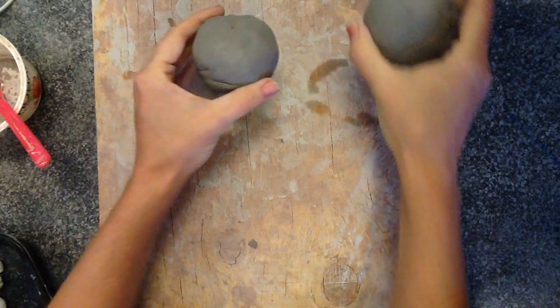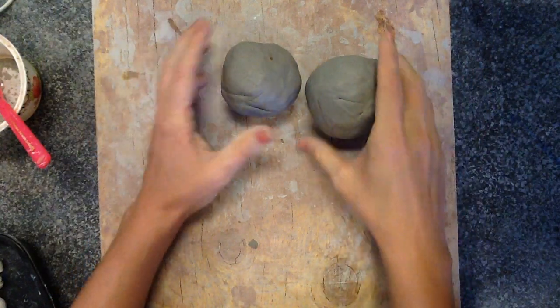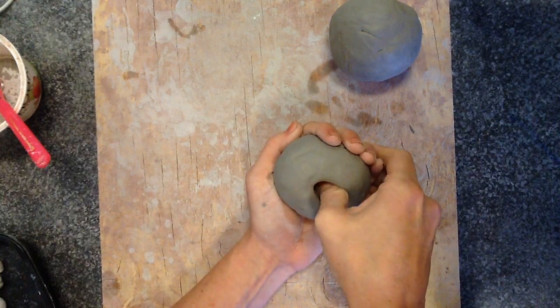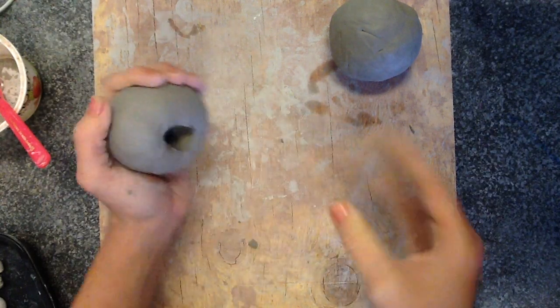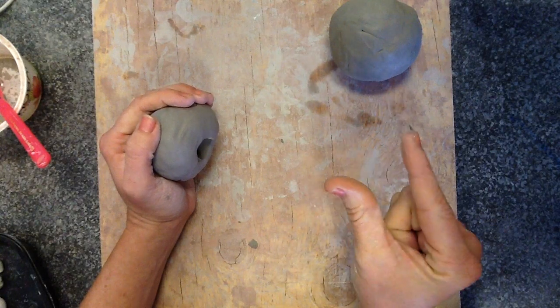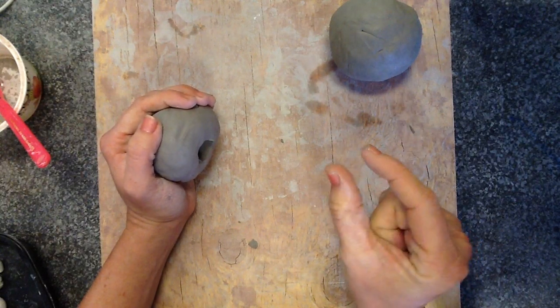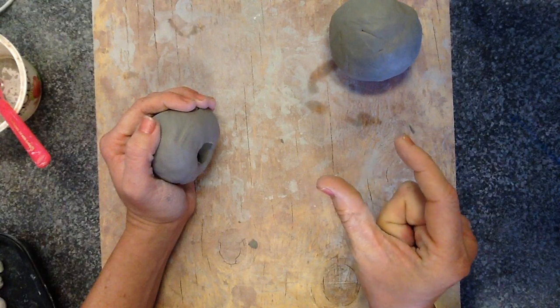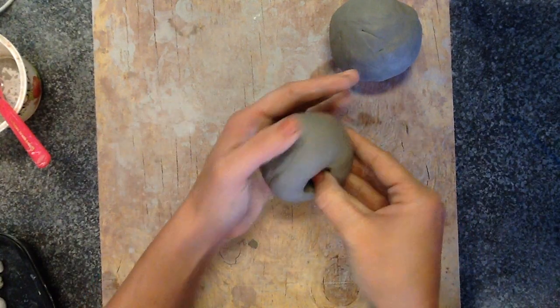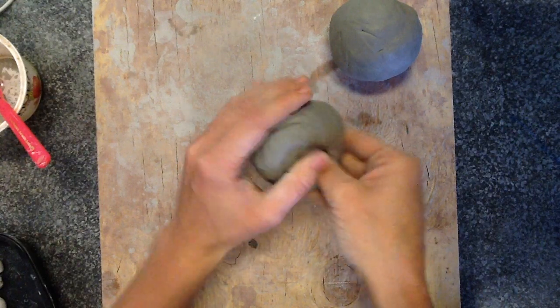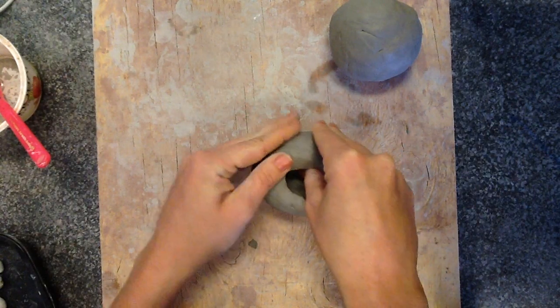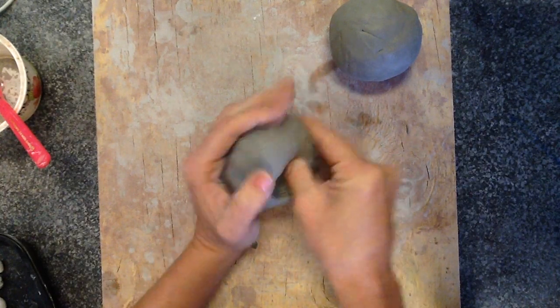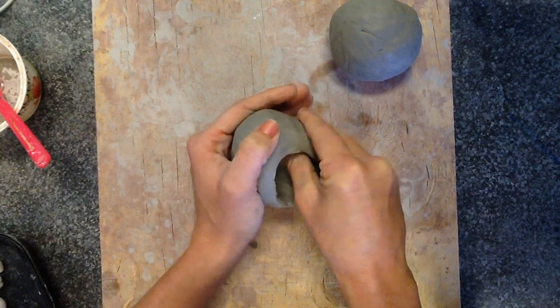All right. There we go. I'm ready to start. So, I'm going to take my first pinch pot. I'm going to take my thumb and press it in. And now, remember, we need to pinch with four fingers like this. If you pinch with two fingers, you'll get spots that are really, really thin and other spots that are thick. And that doesn't have good consistency. And your project is likely not to survive through the kiln. So, you need to pinch with four fingers, kind of pulling your thumb up, pinching your fingers together.